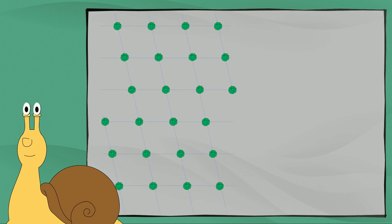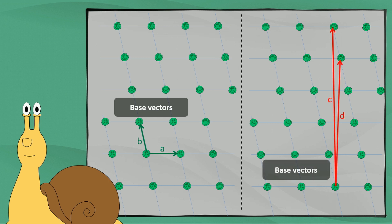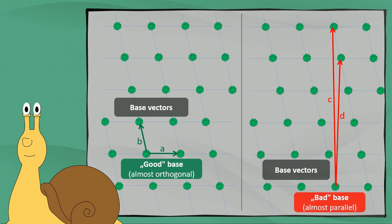To define a lattice field, we need two vectors — the so-called base vectors. Different bases can be used to define the same lattice field. On the left side, you see two base vectors that are almost orthogonal to each other — this is also called a good base. On the right side, the red vectors are almost parallel — this is referred to as a bad base. So there are always good bases and bad bases to define exactly the same lattice field.